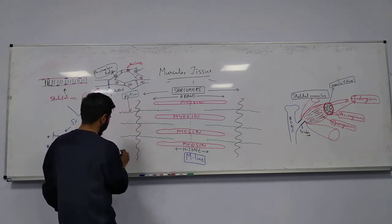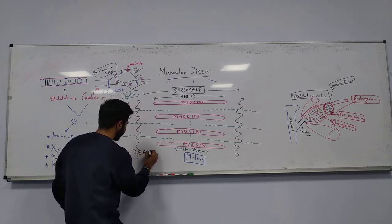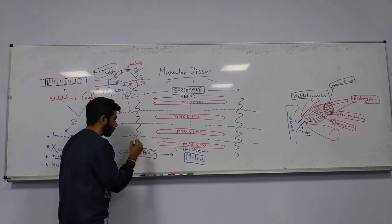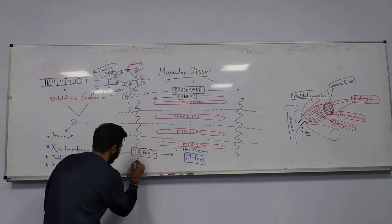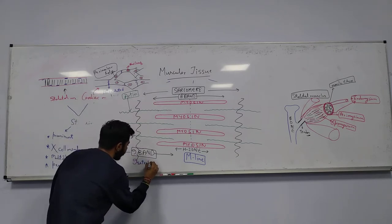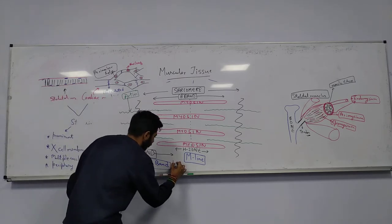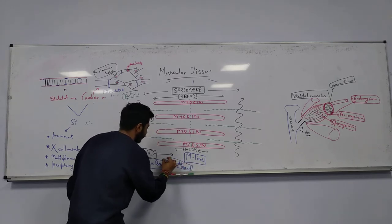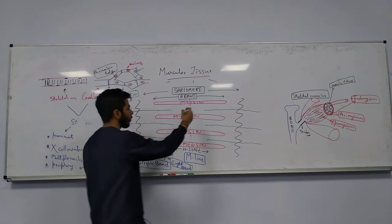This portion is the I band. The I band is also called the isotropic band, also called the light band. The A band is also called the anisotropic or darker band.